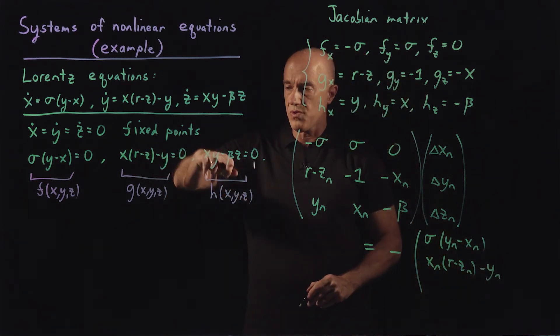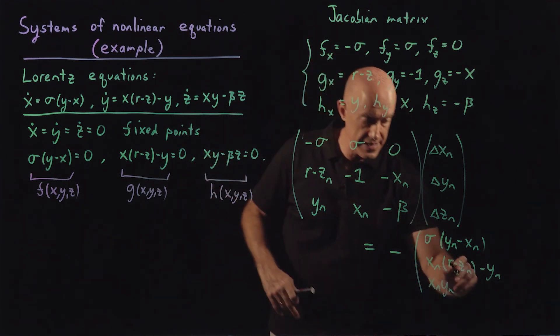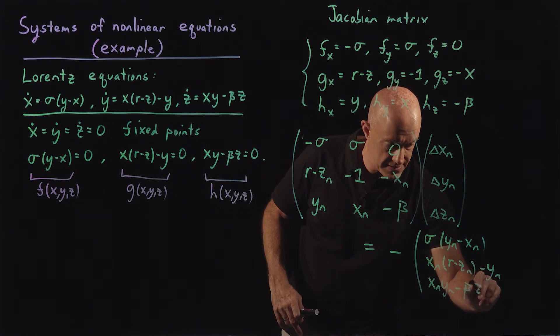And the third row will be h, which will be x_n y_n minus beta z_n.